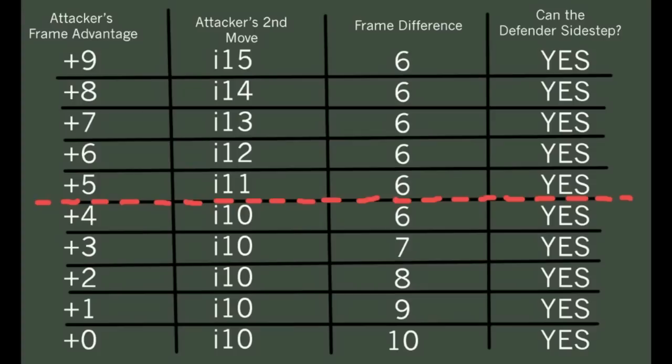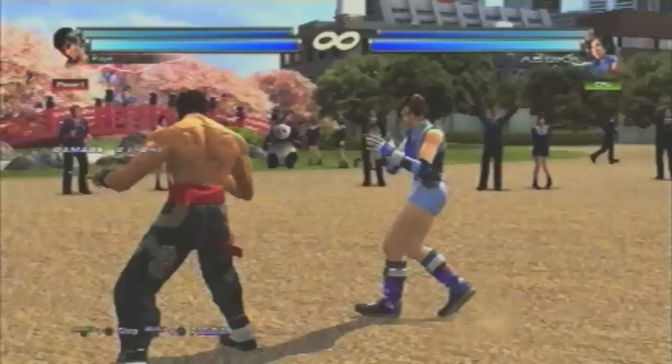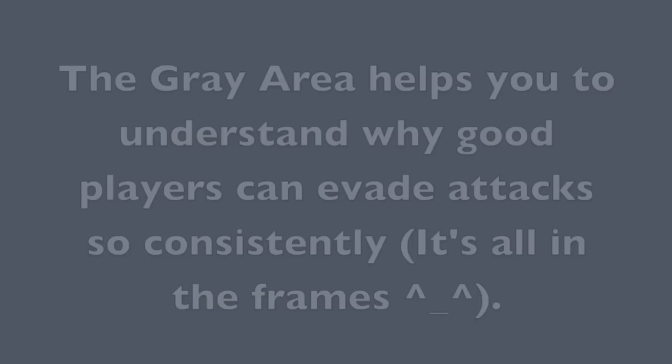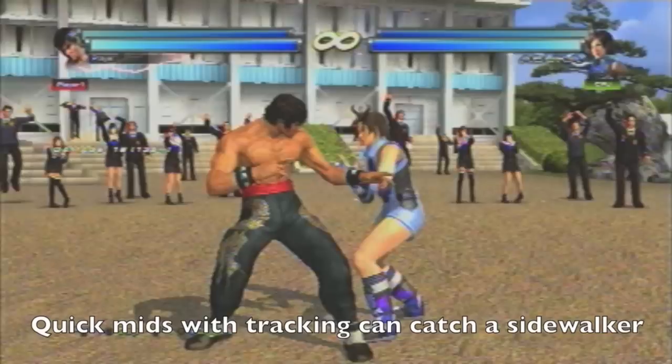Now don't be too scared by this — it is called the gray area after all, so nothing is guaranteed. After blocking a safe attack, if both players don't do anything, there's no danger, and the match goes back to what is called a neutral game. Knowing about the gray area helps you understand why your linear moves are whiffing at point-blank range, and how you can use that to your advantage. There are some exceptions to this principle — for example, tracking moves. If you use a quick mid with tracking, you can potentially catch a sidewalk, rendering the gray area obsolete in a sense. The same goes for quick tracking lows.